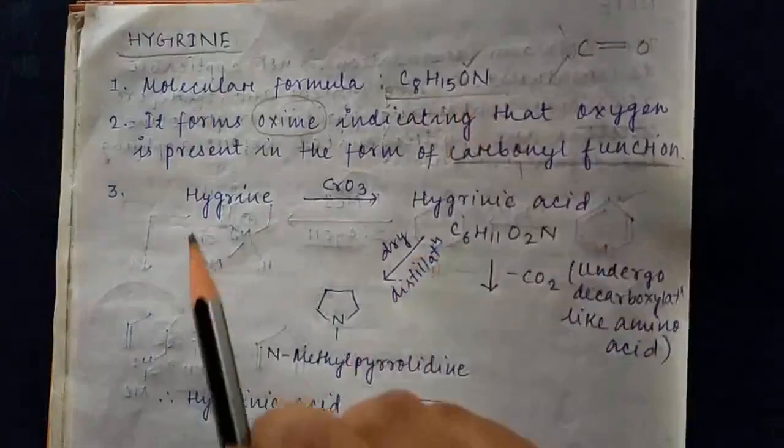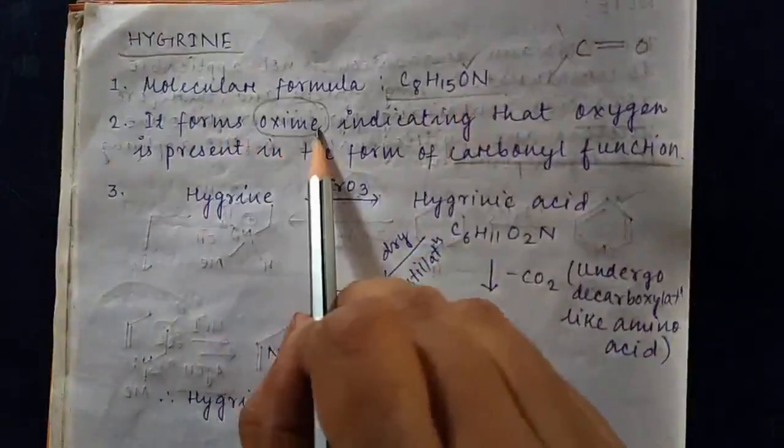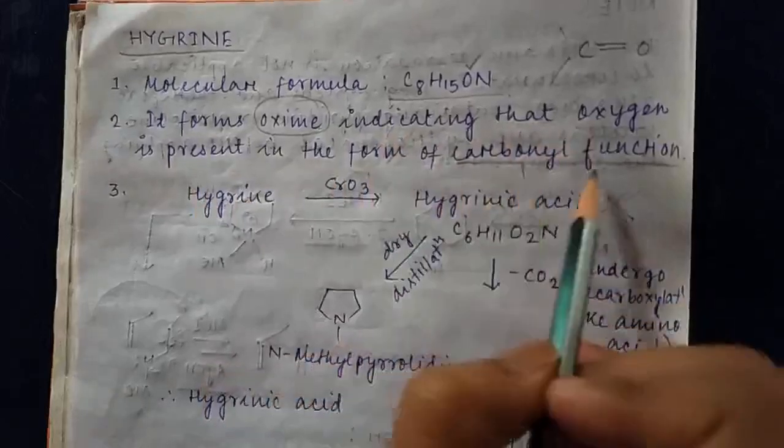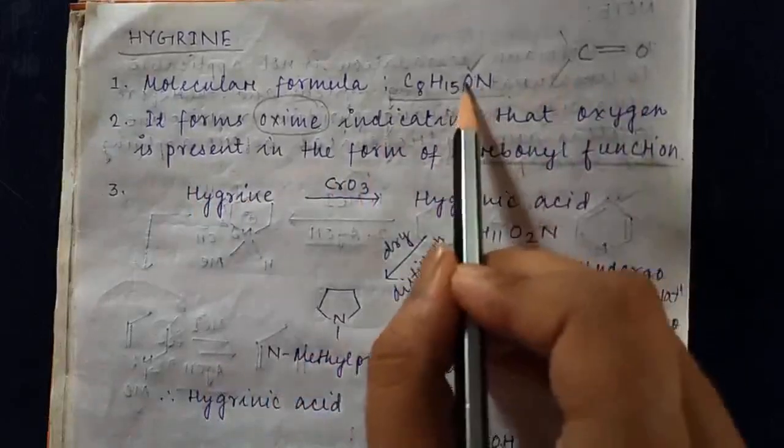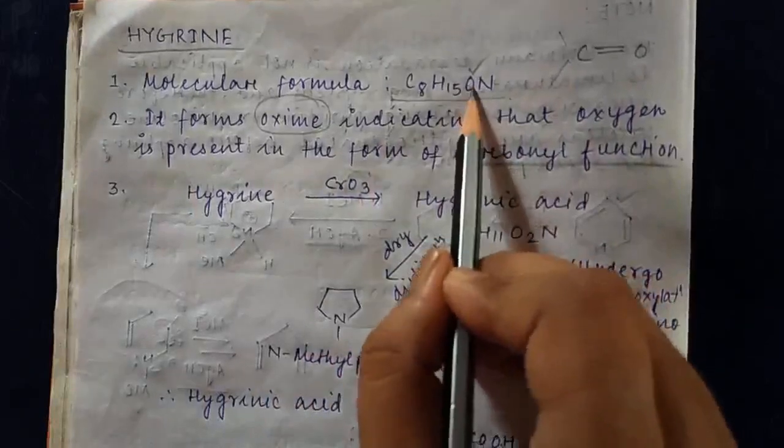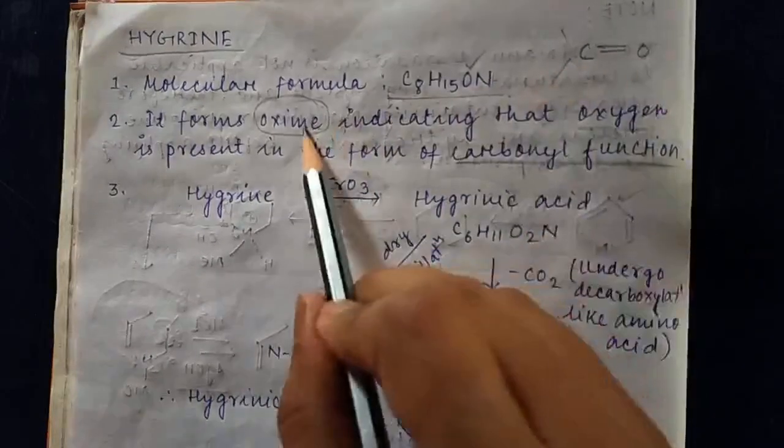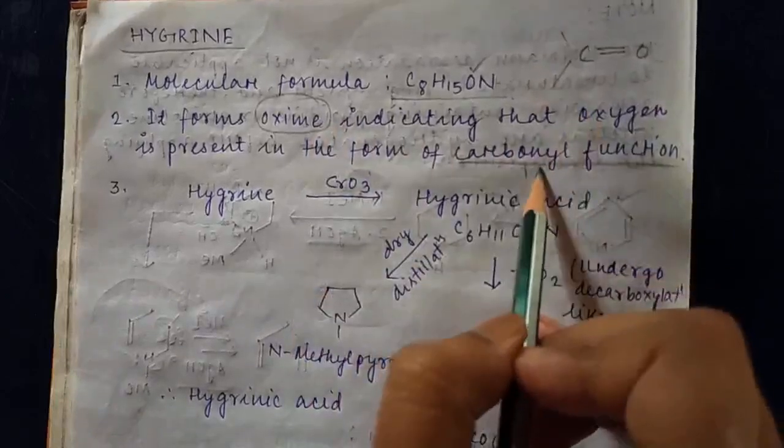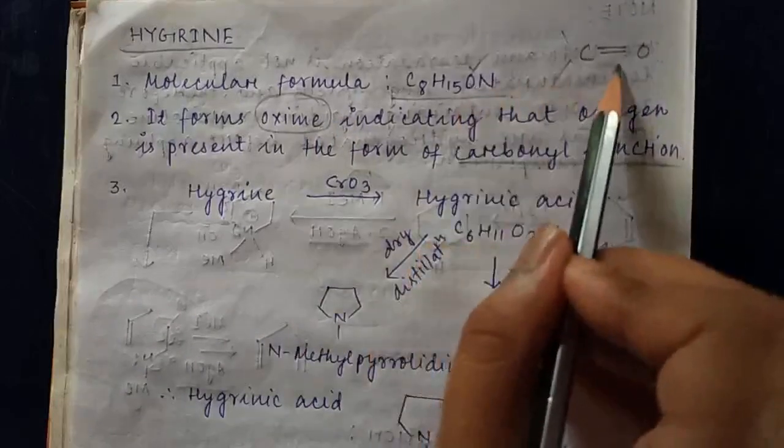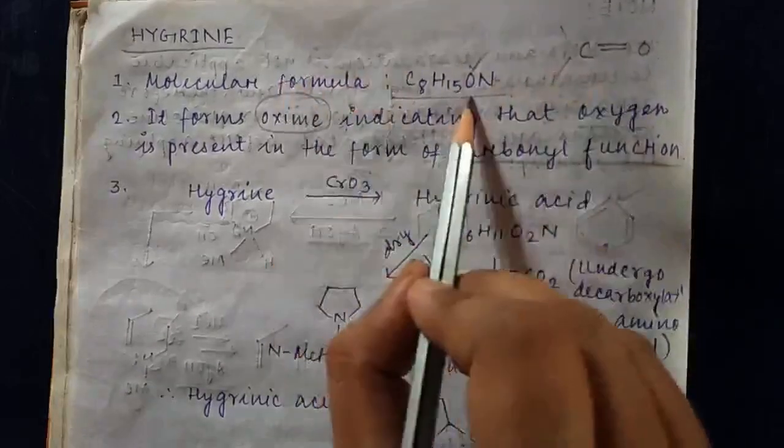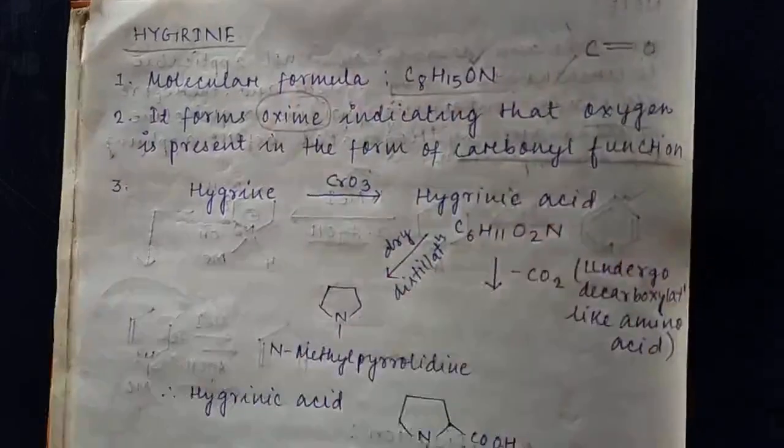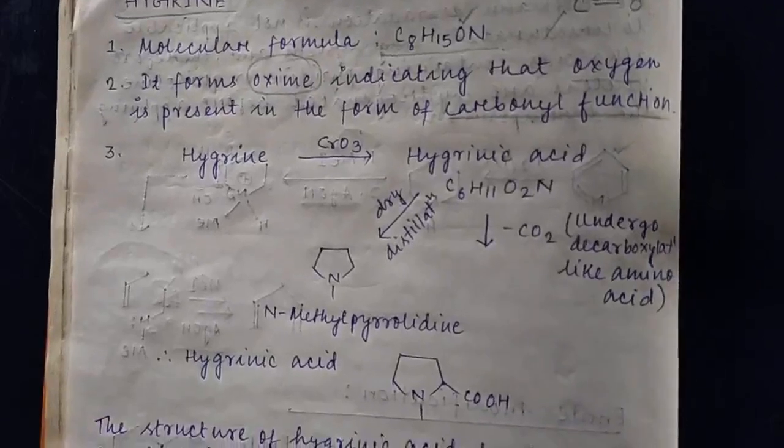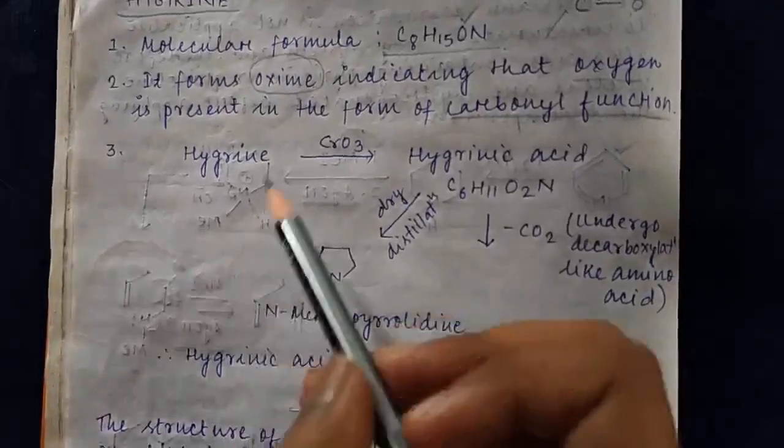It forms an oxime with amine, which indicates that the oxygen present is in the carbonyl function. So the oxygen is present in the form of C double bond O, and it forms an oxime because carbonyl forms oxime with amine. This information will be helpful in elucidating the structure.